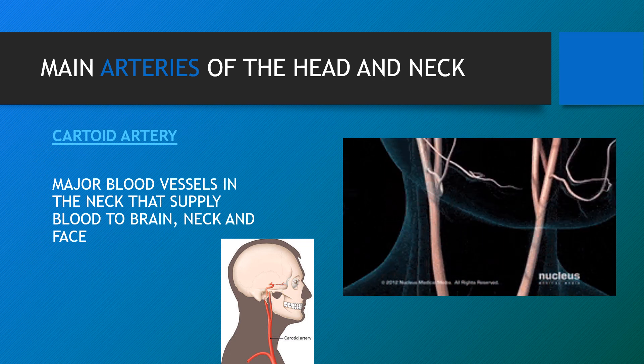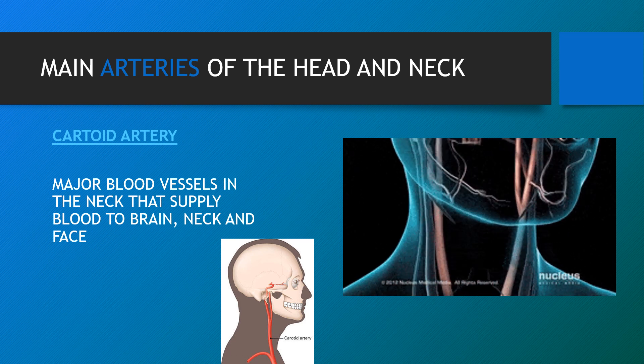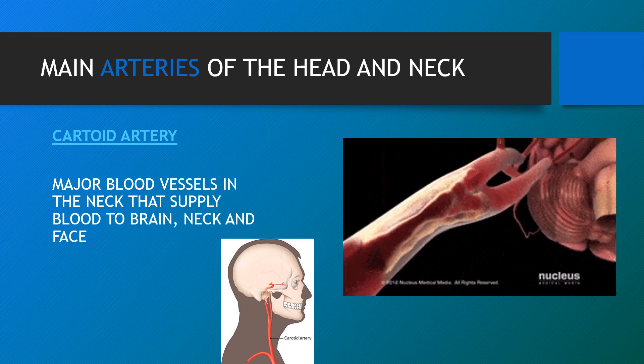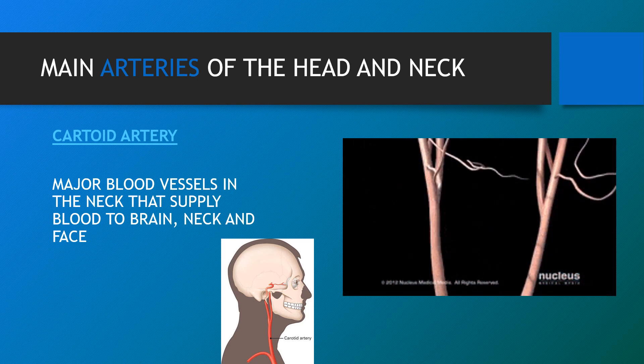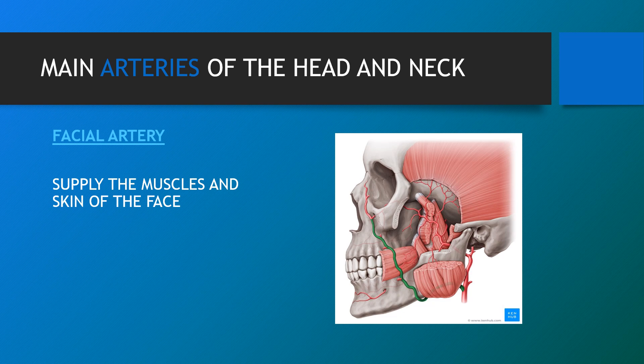The carotid arteries are the major blood vessels in the neck that supply blood to the brain, neck and face. There are two carotid arteries — one on the right and one on the left — and each branches into two divisions: the internal carotid artery supplies blood to the brain, and the external carotid artery supplies the neck. The thyroid artery runs up through the neck and throat and is considered one of the main vessels supplying blood to the thyroid gland. The facial artery supplies the muscles and skin of the face, providing oxygen and nutrients, and is one of the eight branches of the external carotid artery, also known as the external maxillary artery.